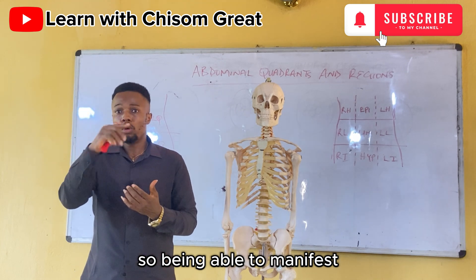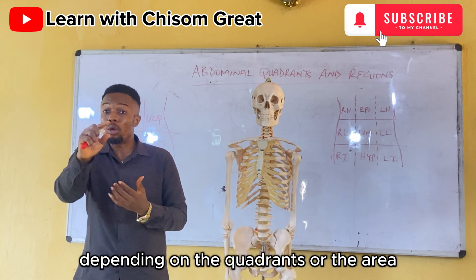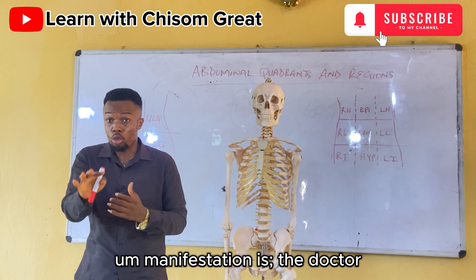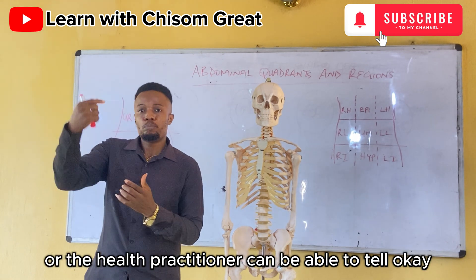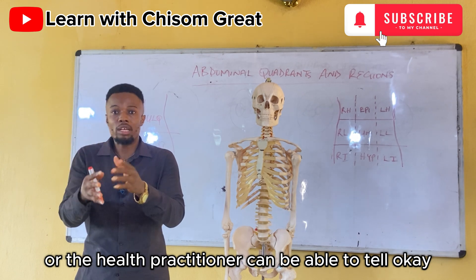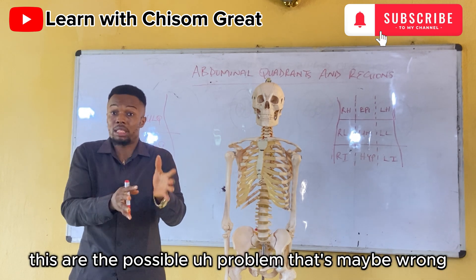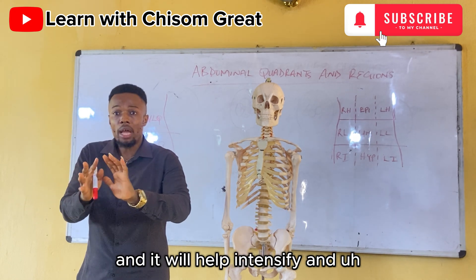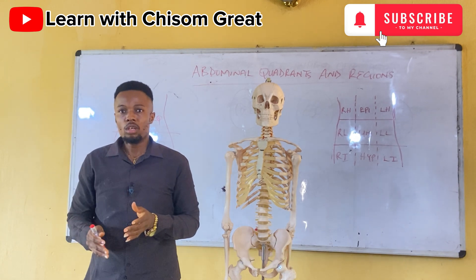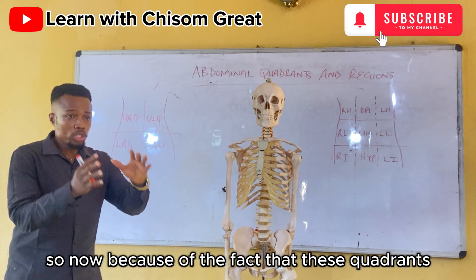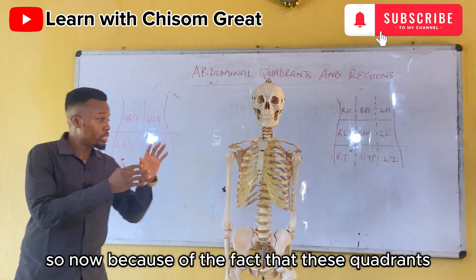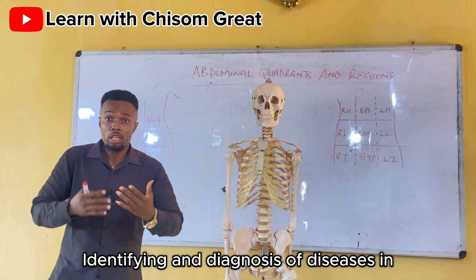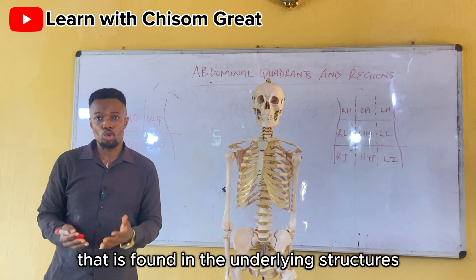Each of the quadrants of the abdomen has an internal organ that lies there. If any disease condition is affecting an internal organ, it tends to manifest at the surface of the abdominal wall. Depending on the quadrant where this manifestation is, the doctor can tell which organs are involved and narrow down further tests.